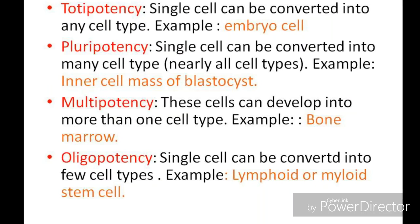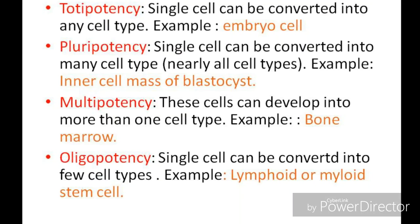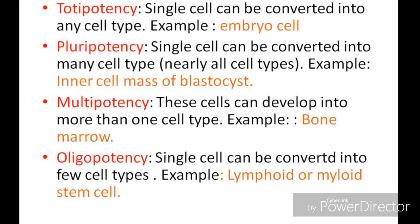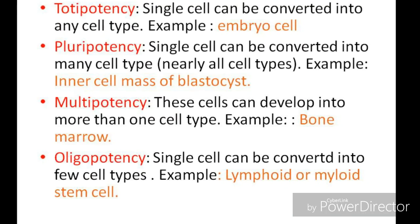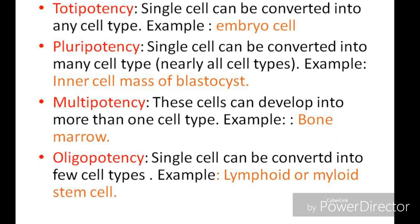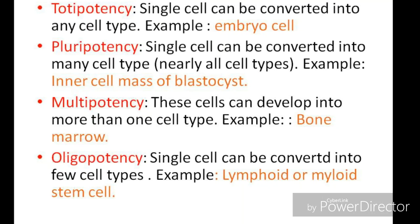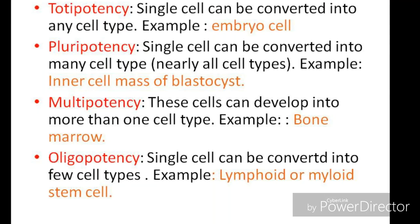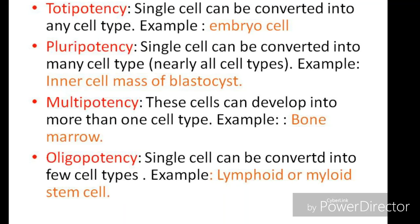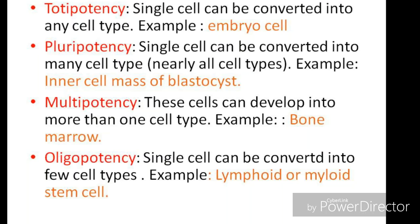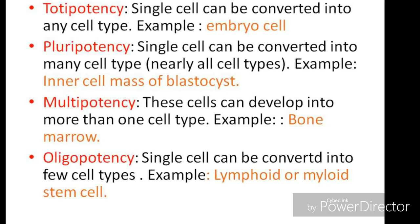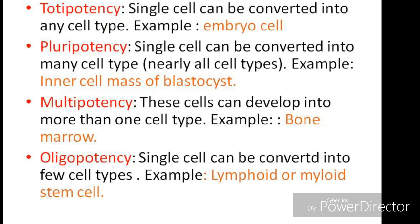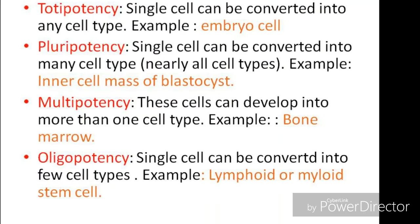Pluripotent cells include the inner cell mass of the blastocyst, as we have seen. Multipotent cells can develop into more than one cell type — for example, bone marrow contains multipotent stem cells that give rise to all cells of the blood, but not to other types of cells. Oligopotency refers to cells that can be converted into only a few cell types; examples include lymphoid and myeloid stem cells.